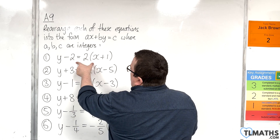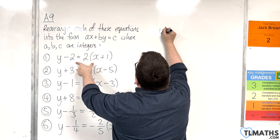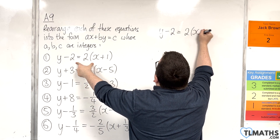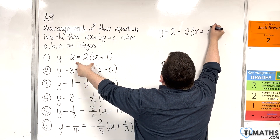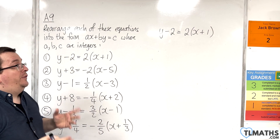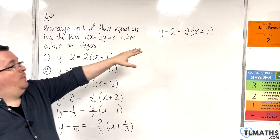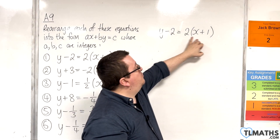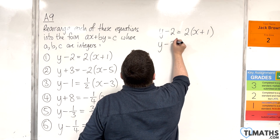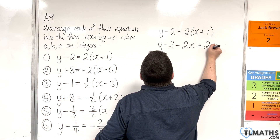Let's take a look at question number one. We have y minus 2 is equal to 2 lots of x plus 1. To get this into the required form, the first thing I would do is multiply out the bracket on the right hand side. So y take away 2 is 2x plus 2.